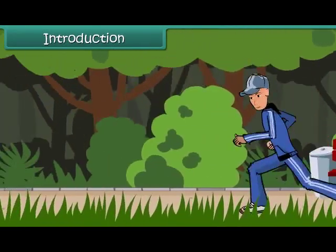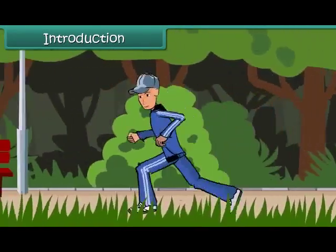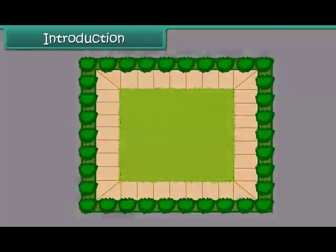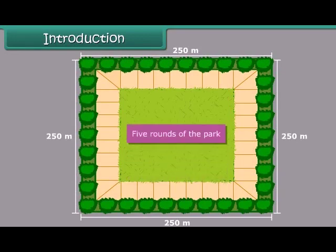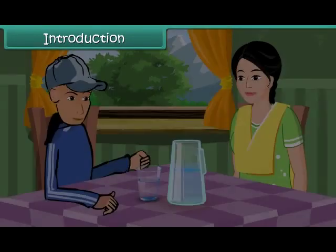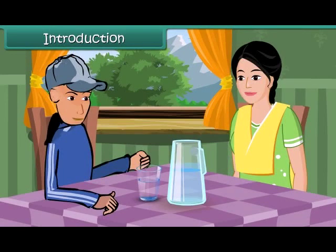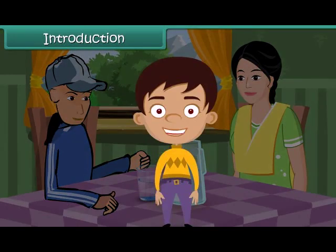You go jogging in a park. The park is a square. Each side of the park is 250 meters long. You take five rounds of the park and return home. Your mother wants to know how many meters you jogged. Can you calculate?